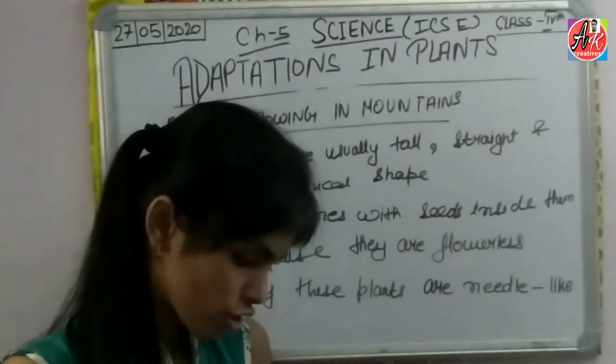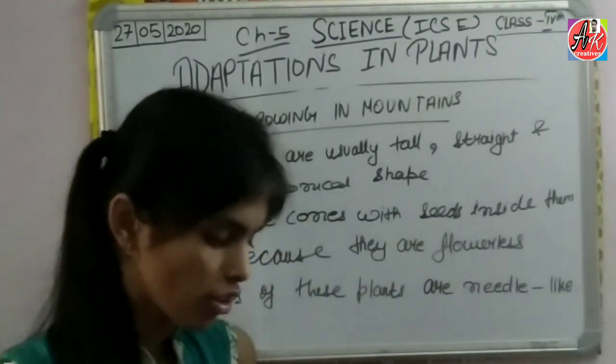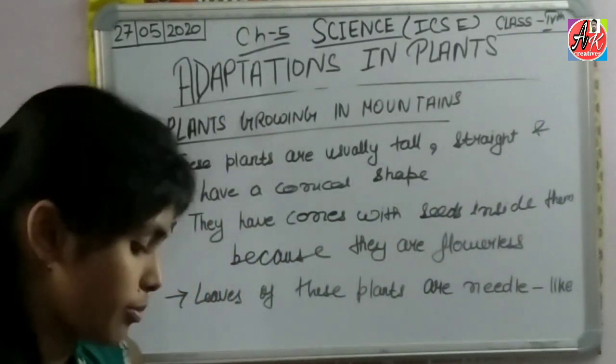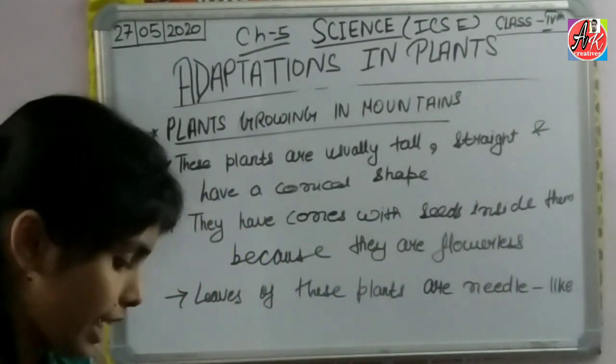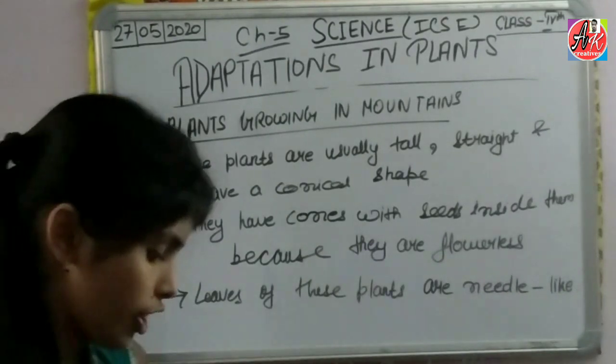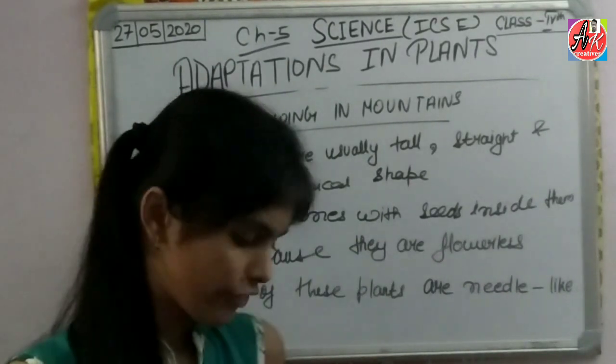They are called coniferous trees. Examples of coniferous trees are pine, deodar, and fir. These plants are found in mountain regions.